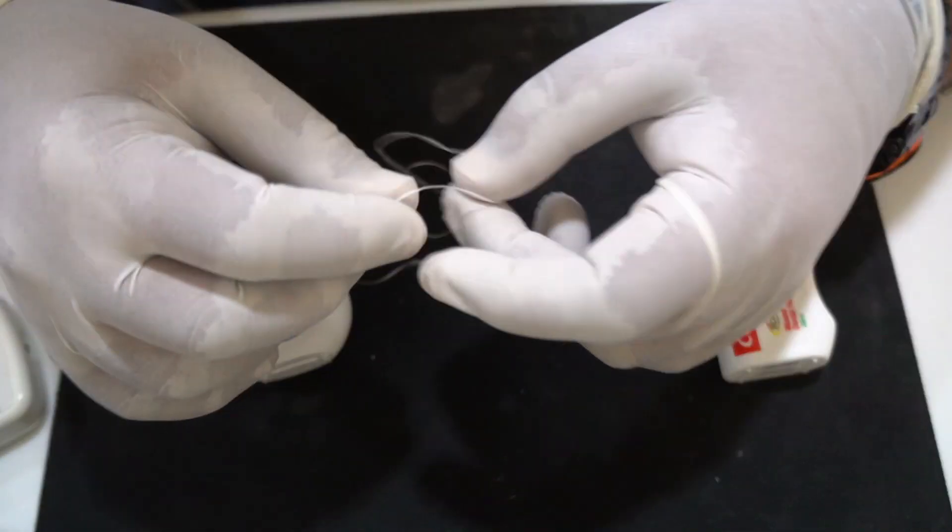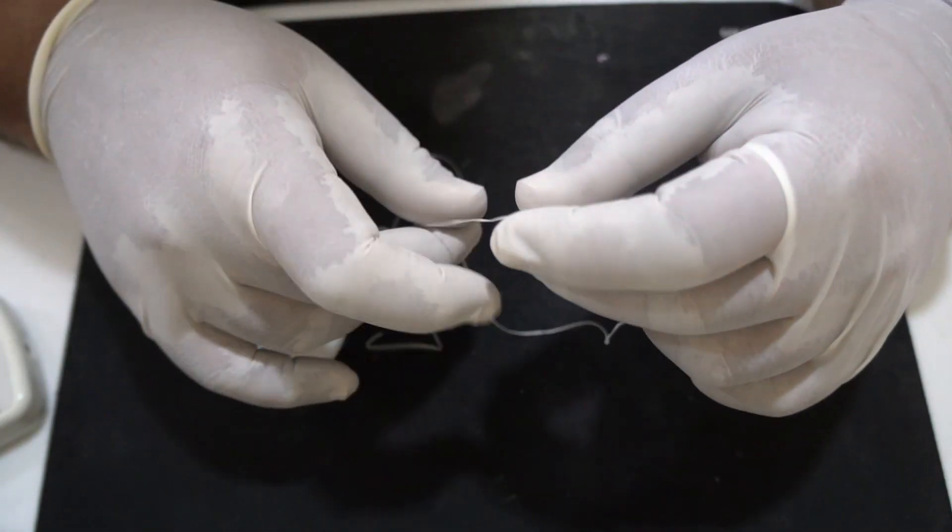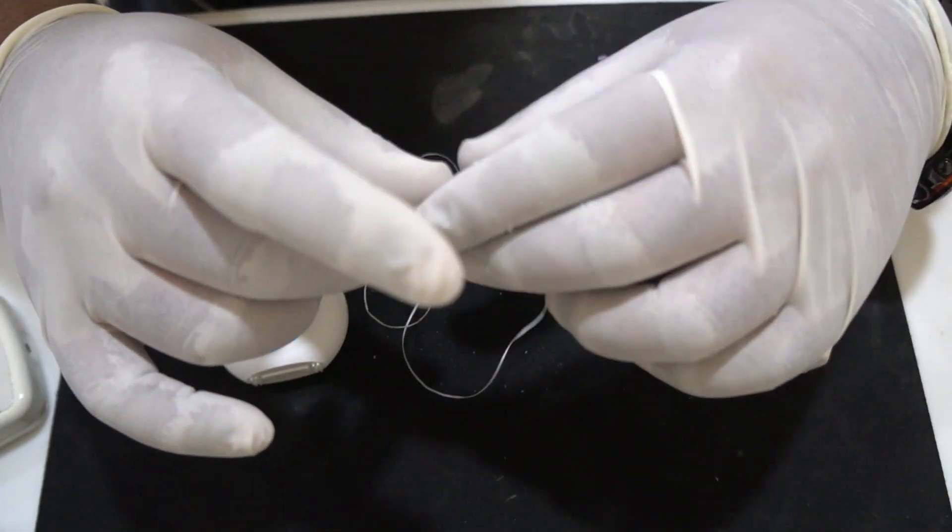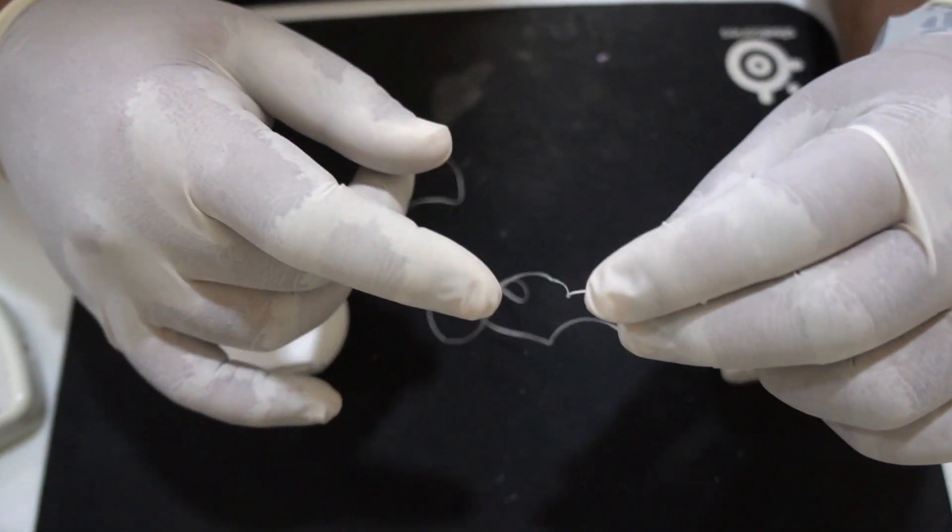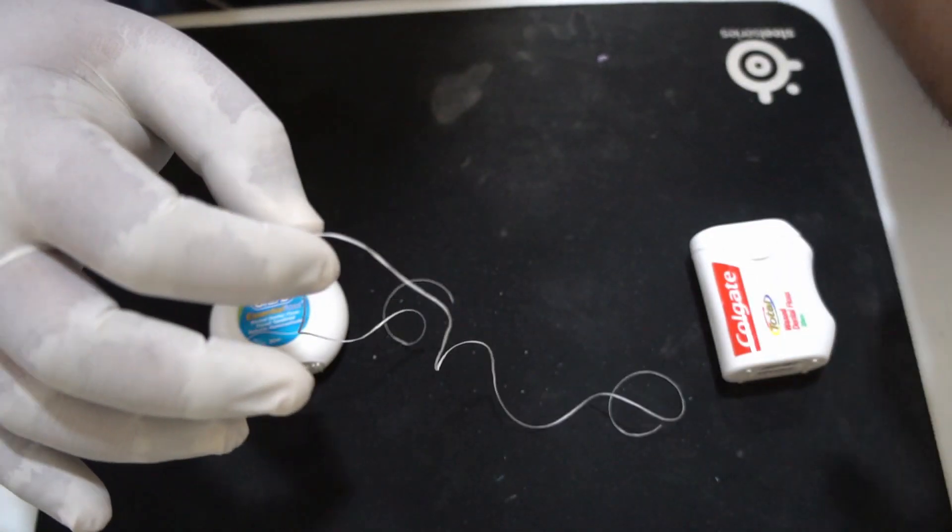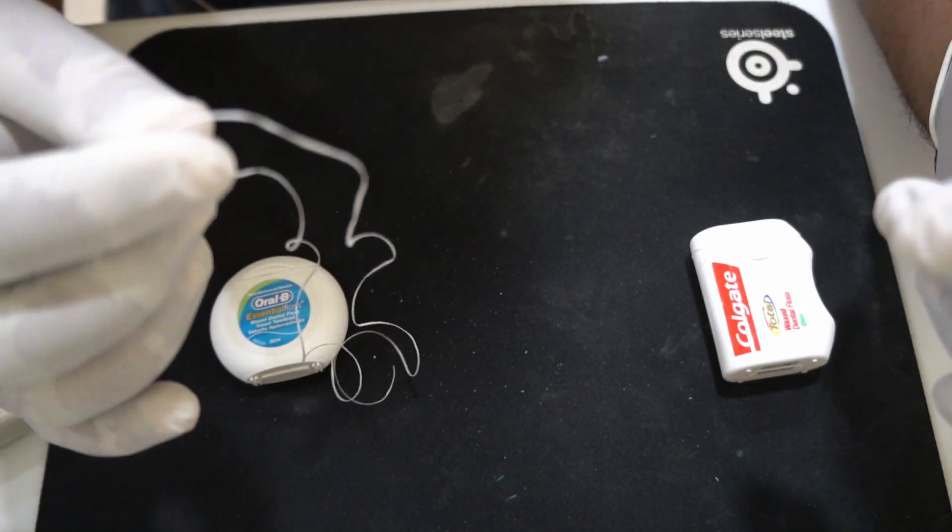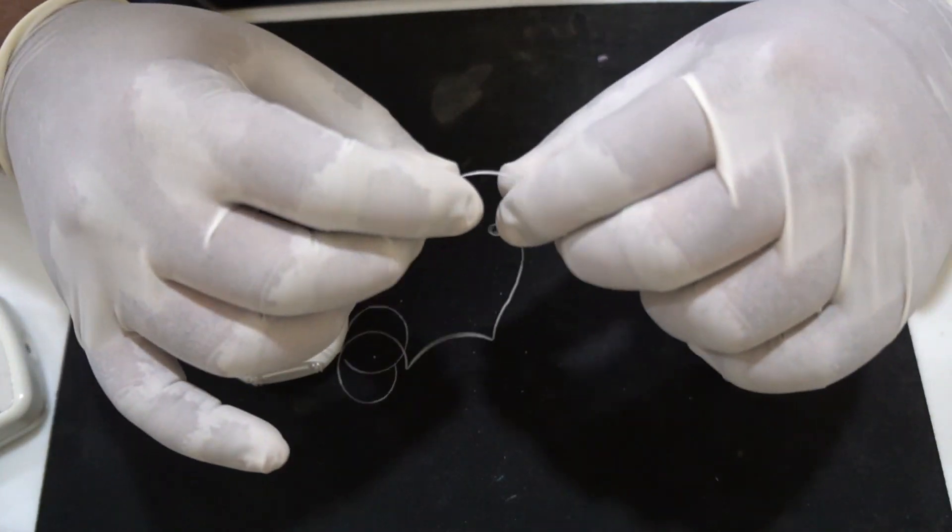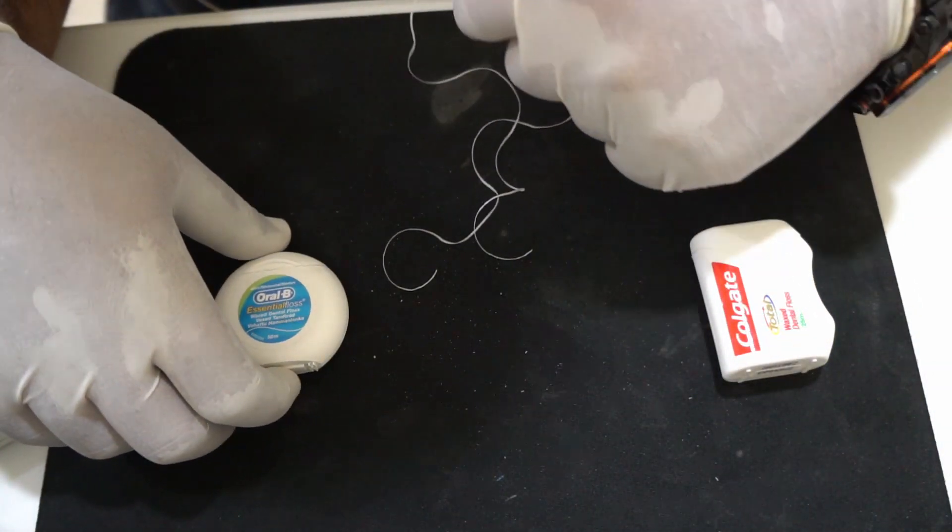Any rubber dam isolation is not complete without creating a watertight seal around the tooth being isolated. The most predictable way of creating such a watertight seal is to use a floss ligature. I have had some requests regarding how to do a simple floss ligature, so I thought I will just give you a demo.